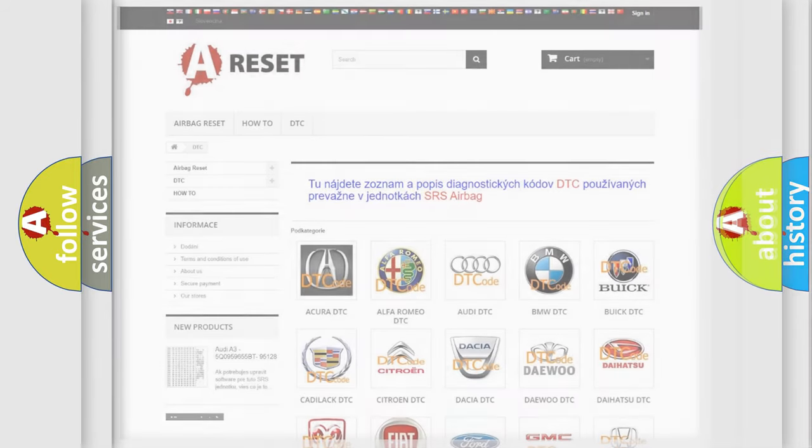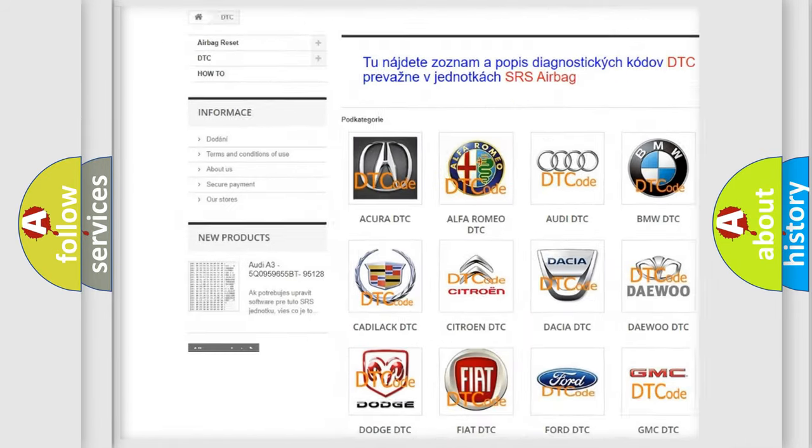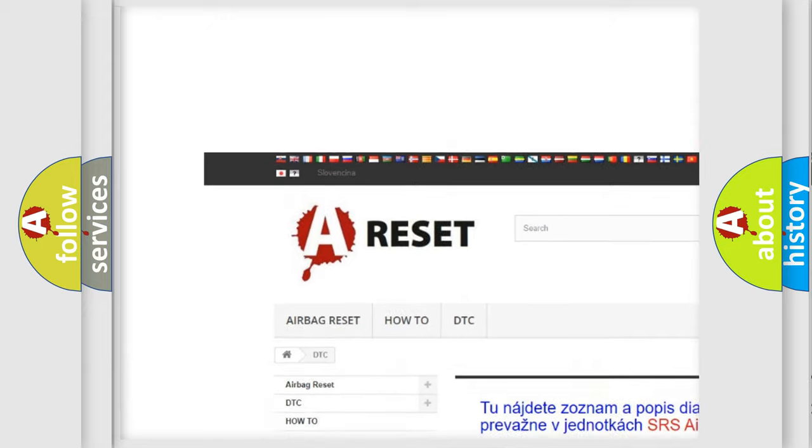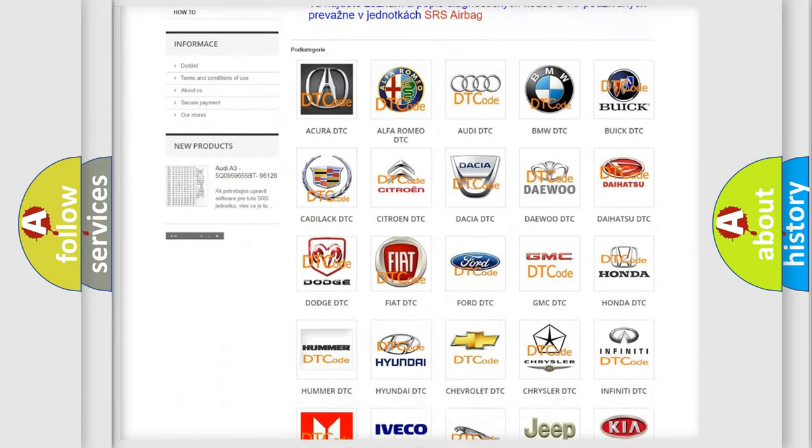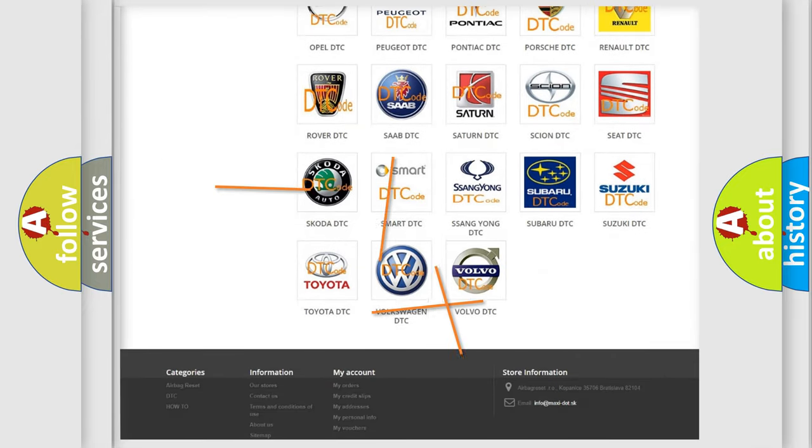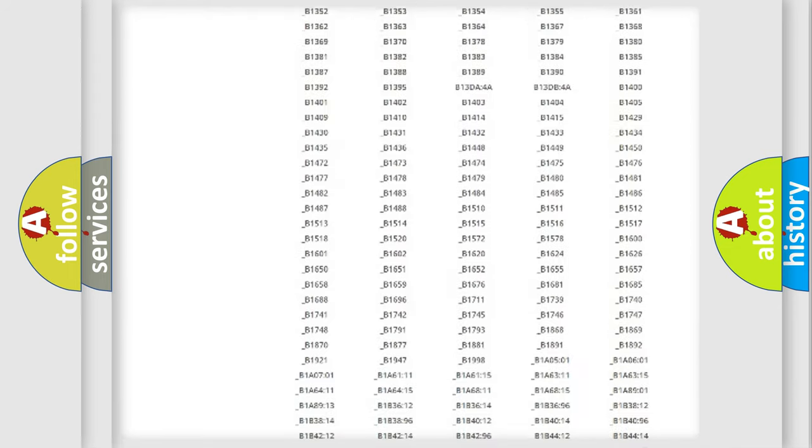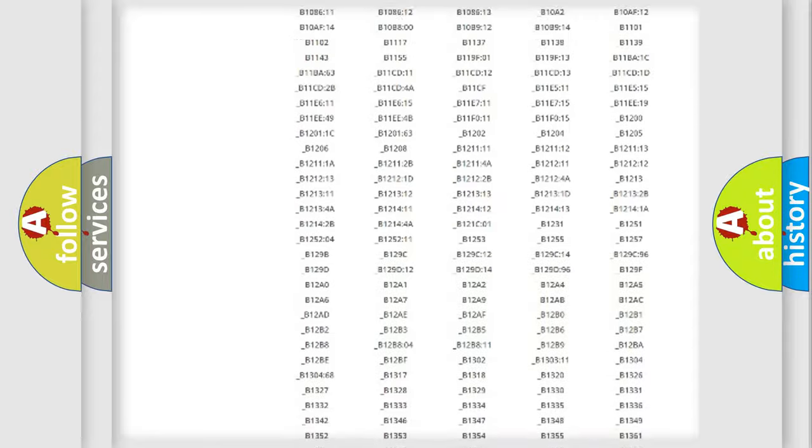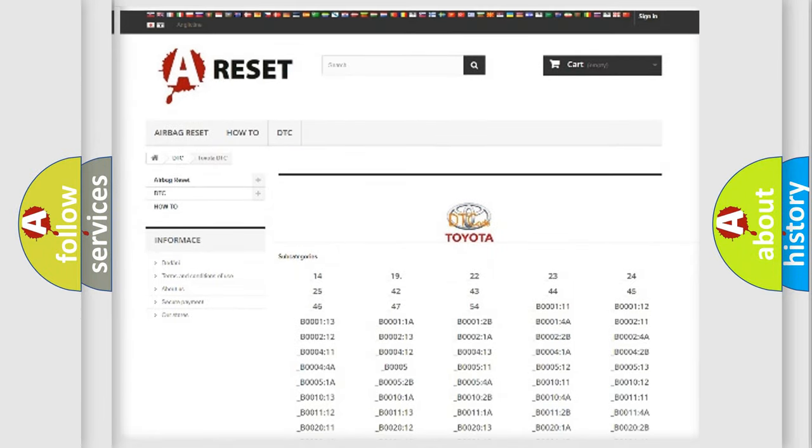Our website airbagreset.sk produces useful videos for you. You do not have to go through the OBD-II protocol anymore to know how to troubleshoot any car breakdown. You will find all the diagnostic codes that can be diagnosed in Toyota vehicles, and also many other useful things.